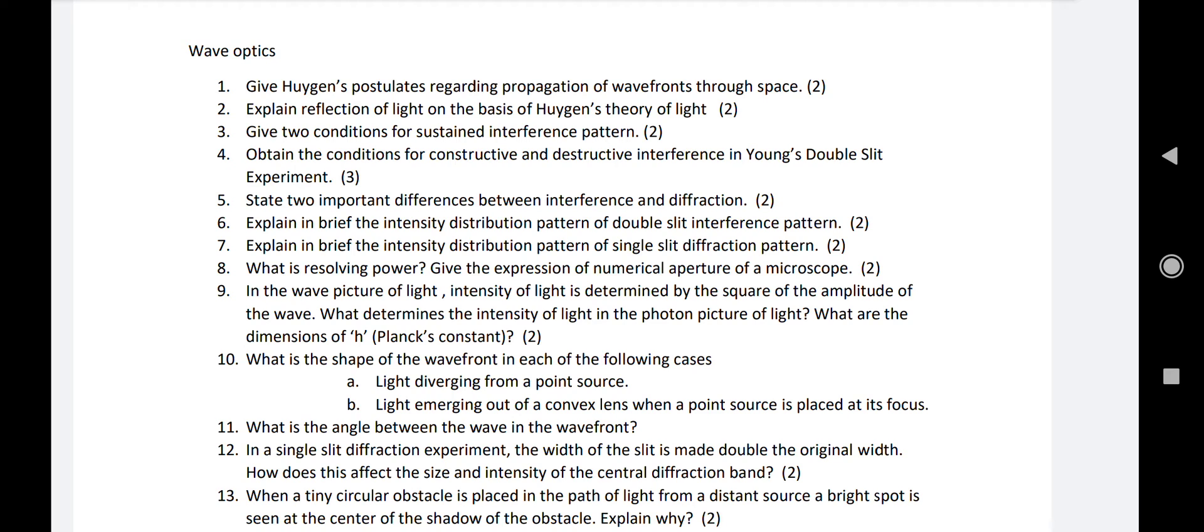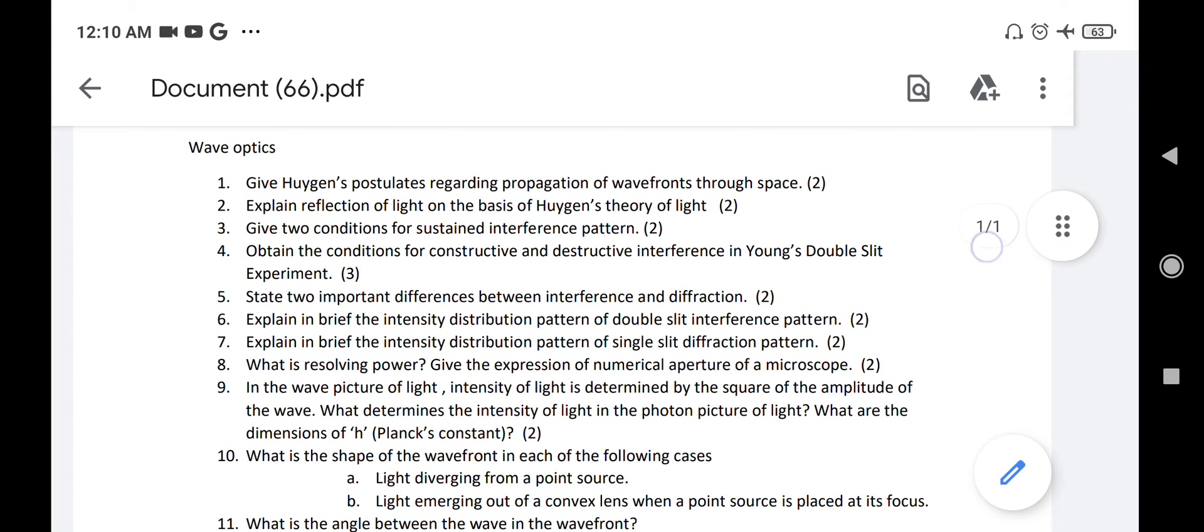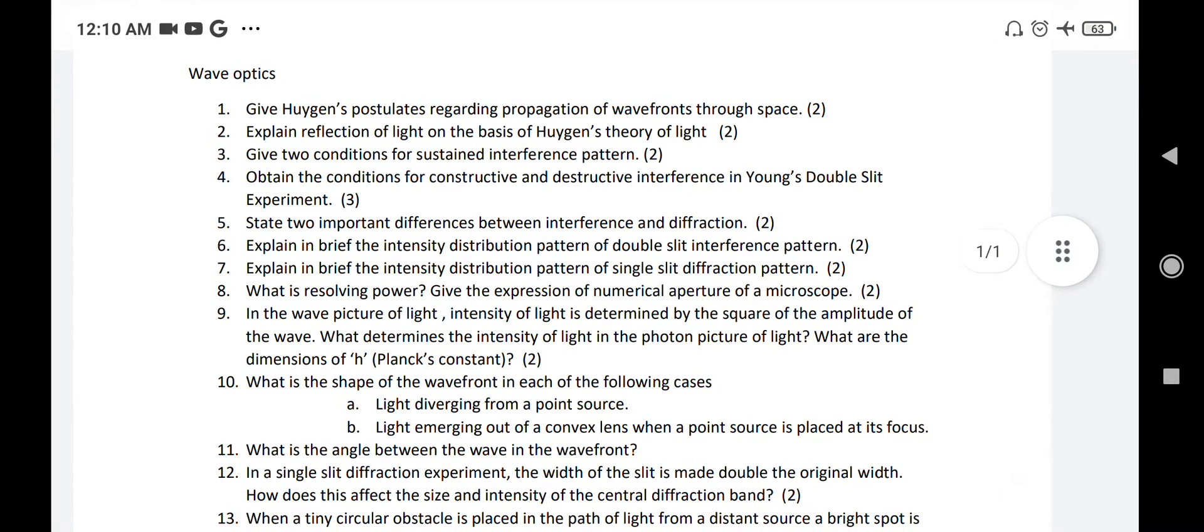Interference maxima: difference between the two rays should be even multiple of lambda by 2. Interference minima: difference is odd multiple of lambda by 2. Diffraction minima: difference between the two rays should be even multiple of lambda by 2.